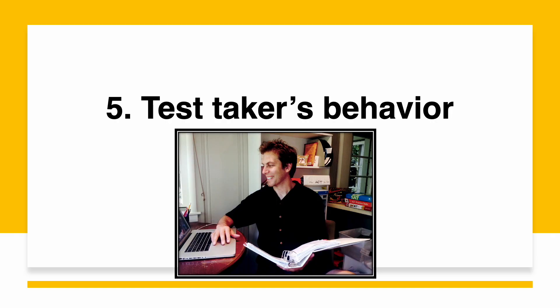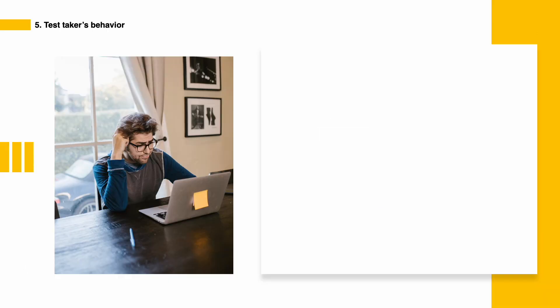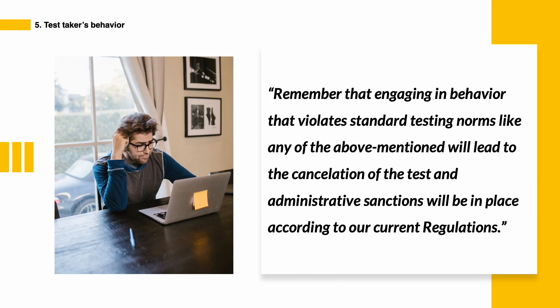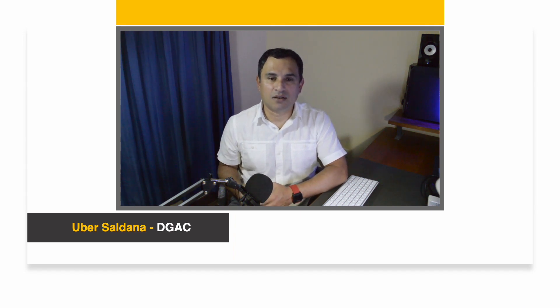And now we've reached point number five: test taker's behavior. Remember that engaging in behavior that violates standard testing norms — like any of the above mentioned — will lead to the cancellation of the test, and administrative sanctions will be in place according to current regulations. We're going to end this video by stressing the need to comply with the testing norms and guidelines described in this presentation, so you can complete your test uninterrupted and successfully. And that's all there is to taking your English test with the DJAC. Practice your English hard, and best of luck.